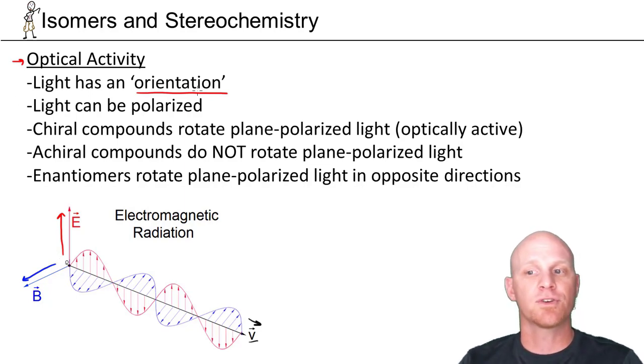But you can shine it through a polarizing filter. This is the basis of polarizing sunglasses. If you shine light through a polarizing filter, it will block out all the orientations except for one. At that point, you now have plane-polarized light.